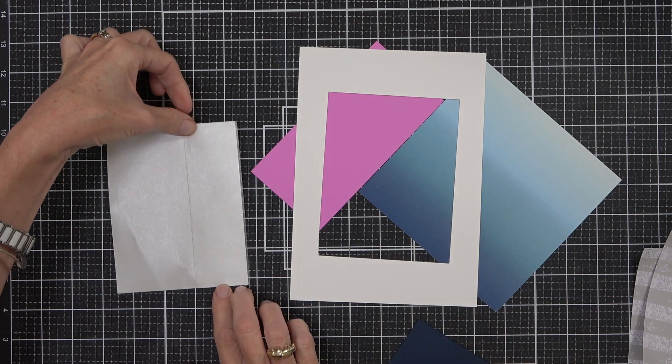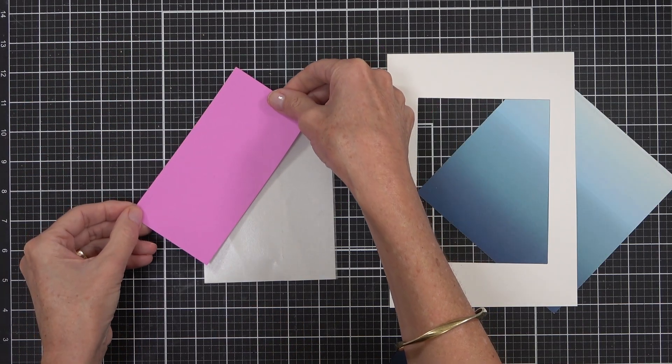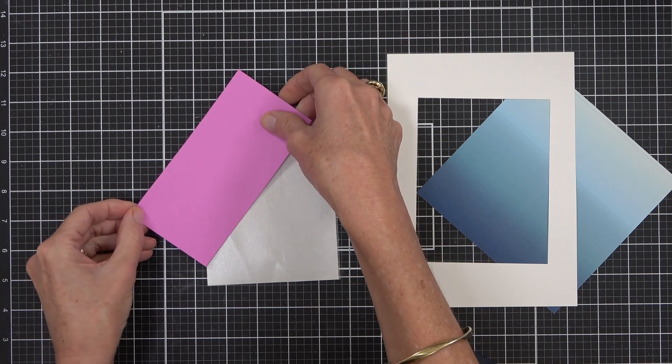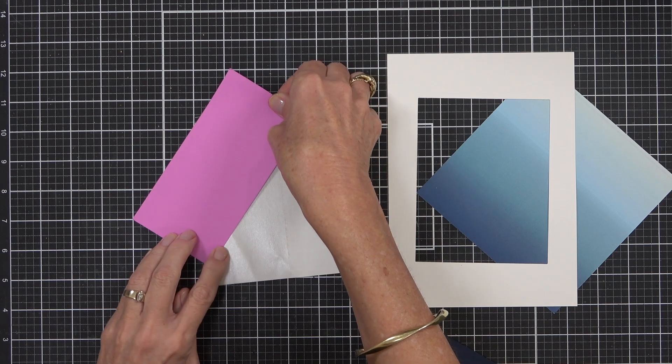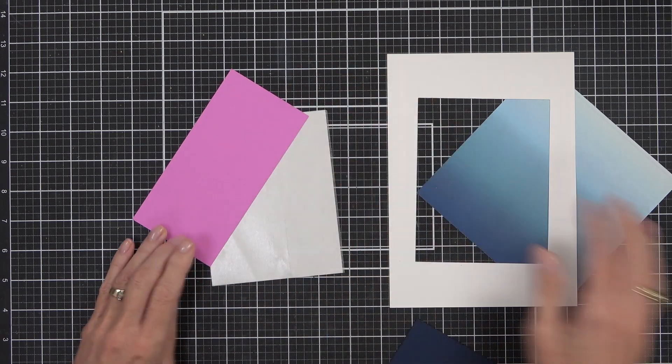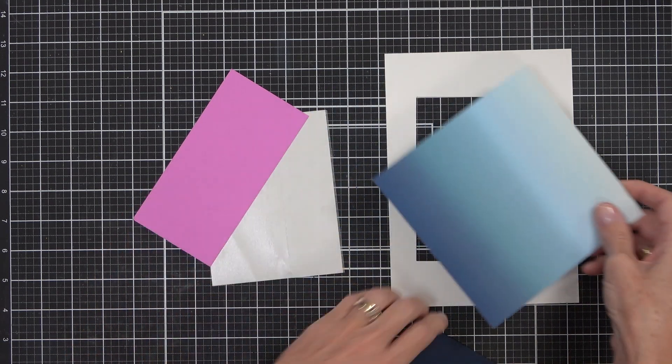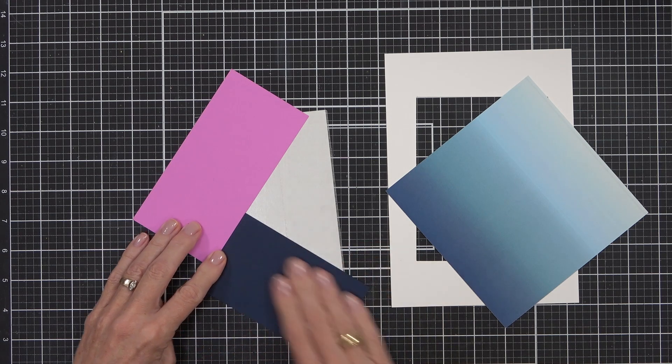I've got a piece of copy paper that's cut to the A2 size, so four and a quarter by five and a half, and I've added some adhesive sheet from Altenew. This is a great product I reach for all the time, and then I can simply just use my cardstocks here.